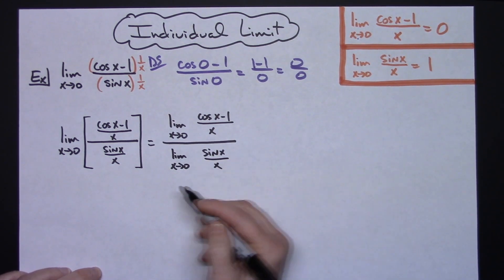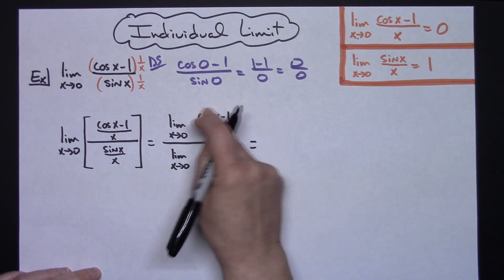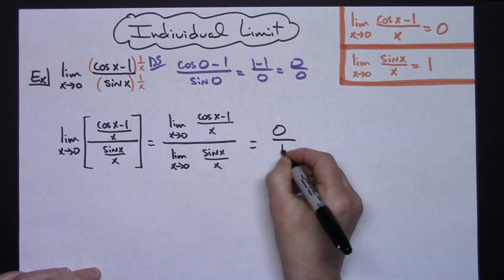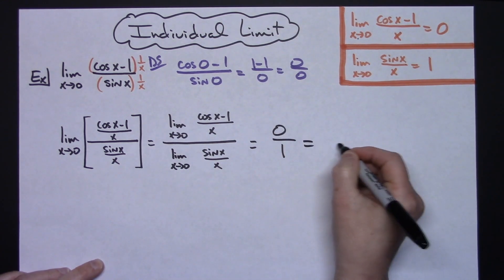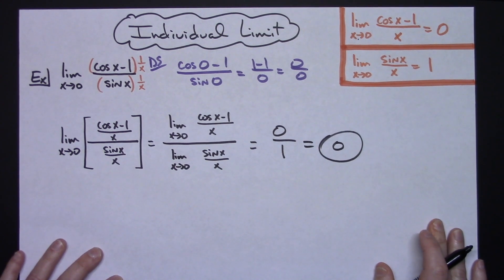It's putting an extra step in there, but showing you that property of limits that says you can legally do this. I know this one is 0. I know this limit is 1. 0 divided by 1 is 0. So there are my justification steps for that.